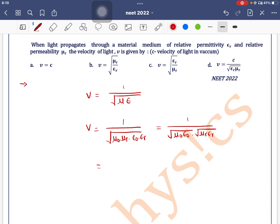The term 1 by under root of mu 0 into epsilon 0 is the speed of light c. So we can write this as c divided by under root of mu r into epsilon r. This is the velocity of light. Option d is the correct one.